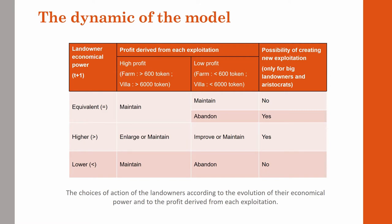Since farmers can only own one farm, new exploitations can only be created by big landowners and aristocrats when their revenue is superior or equivalent to the previous iteration. In the equivalent case, the landowner can only create new exploitations if he abandons the same number of exploitations.